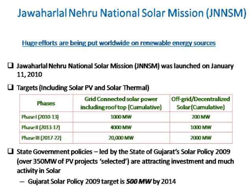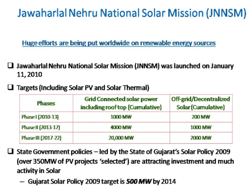There are huge efforts being put worldwide on renewable energy sources, and India is no exception. The Indian government is also putting a lot of effort to make this possible. One such program is the Jawaharlal Nehru National Solar Mission, JNNSM, launched in January last year. It has very high targets — by the end of the program in 2022, the government of India is planning to install 20,000 megawatts of solar power, done in various phases. Phase one ending in 2013 targets 1,000 megawatts, phase two ending in 2017 targets 4,000 megawatts, and eventually 20,000 megawatts.